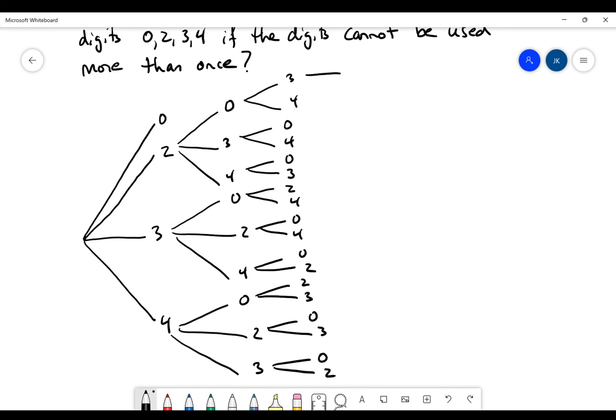And then from here, there's only one final value that I can go to for each one of these little branches. For this last one it could only be 4, this could only be 3, this could only be 4, this could only be 0. And you'll see that these are coming in pairs.